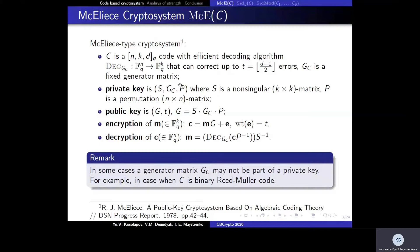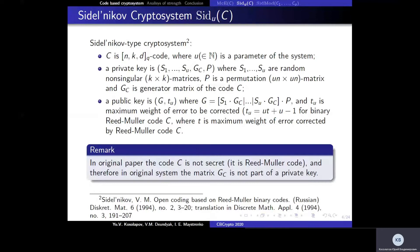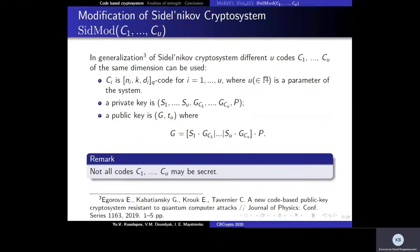To improve the security of this system, Sidelnikov proposed a new public key cryptosystem where the secret key consists of U non-singular matrices S1 through SU, a generator matrix GC, and a permutation matrix P. The public key G is a product of such form.